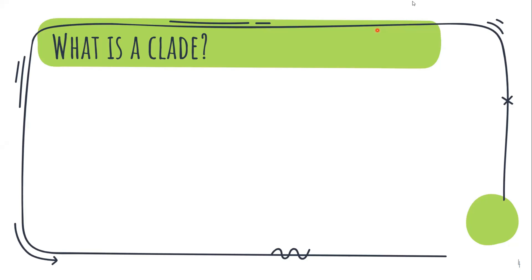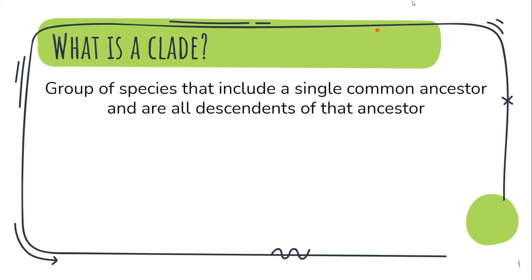So what do you mean by clade? It is a group of species that include a single common ancestor and are all descendants of that ancestor.